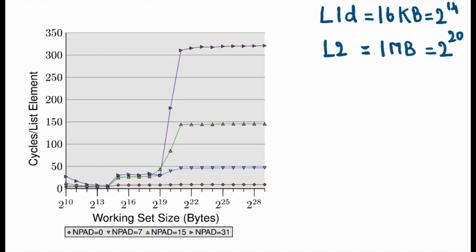This is the benchmark graph after we have executed the code with different n-pad size and different dataset size. Just remember, this benchmark has been executed on a machine which is having 16 KB of L1 data cache and 1 MB of L2 cache.